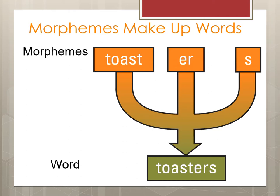Morphemes are what make up words. When we look at the word 'toasters,' we can see that it consists of three morphemes: toast, -er, and -s.